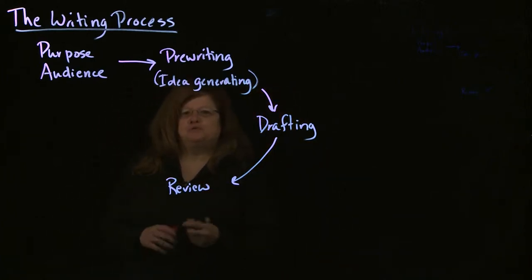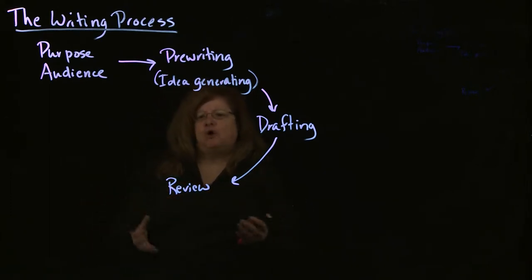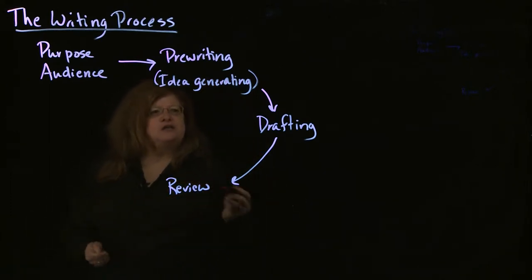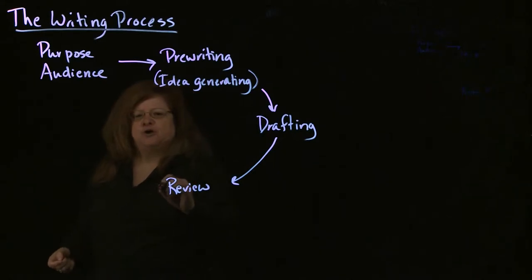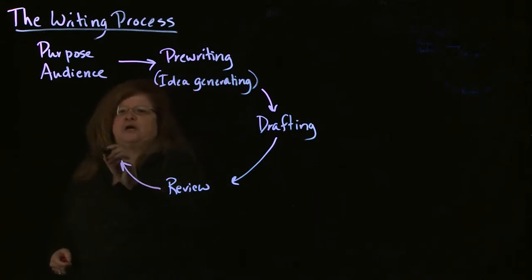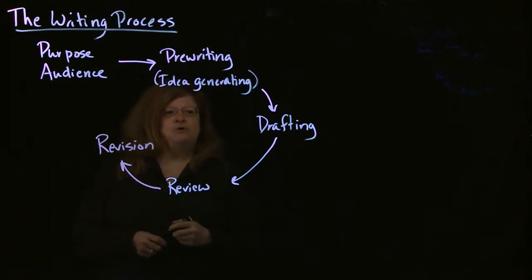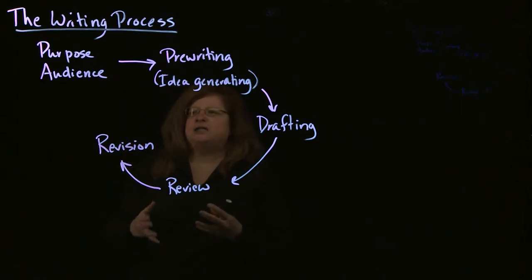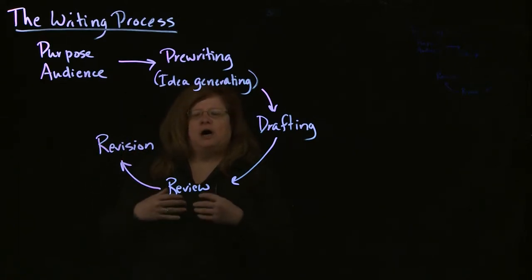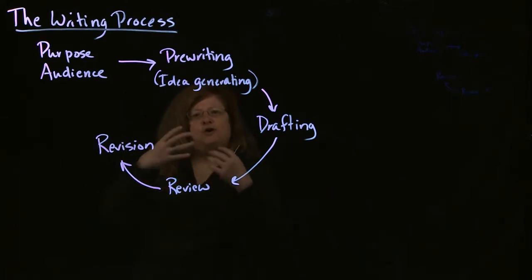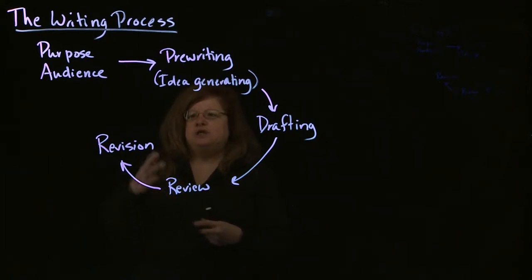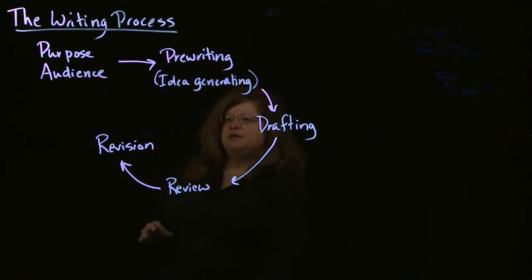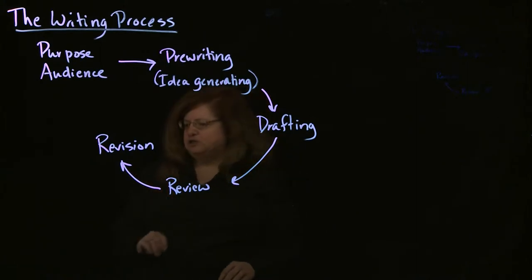Once your paper has been reviewed — whether by yourself, your classmates, your instructor, or whatever — we then get to the next phase of the process, and that is known as revision. Writing is not a straight line process. You are generally going to be repeating various things. Revision, then, is what you do after you've got some review.